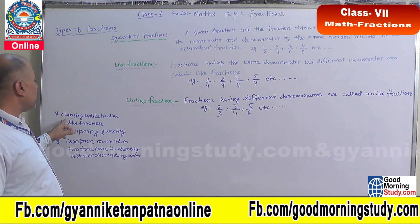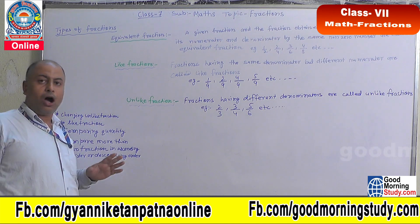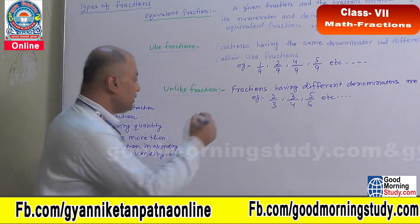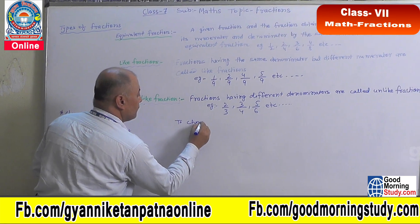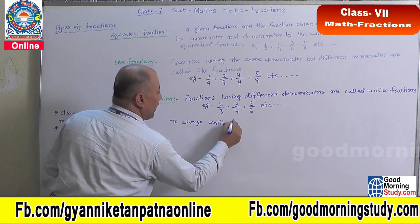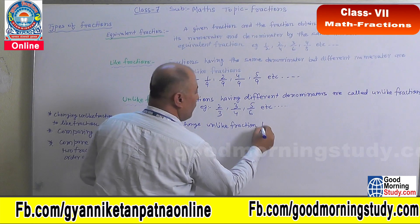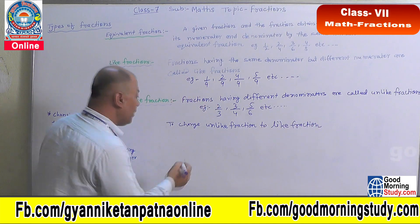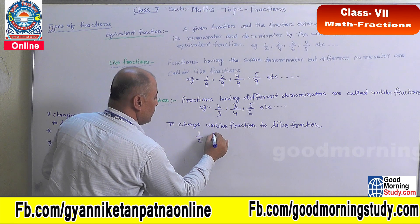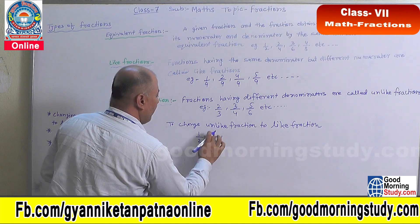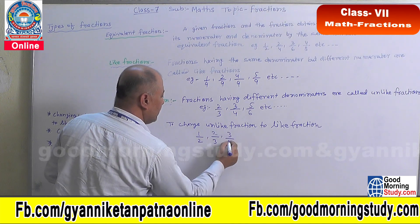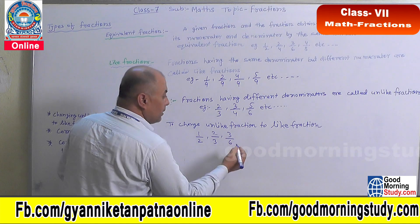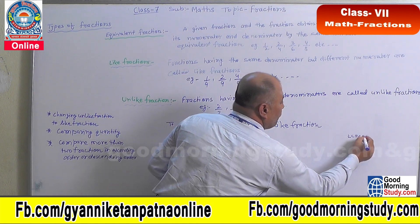Now we discuss changing unlike fractions to like fractions. How can we change unlike fractions to like fractions? The question is: to change unlike fractions to like fractions. As for example, 1 by 2, 2 by 3, and 5 by 6 are given, which are unlike fractions. First of all, we take the LCM of the denominators.